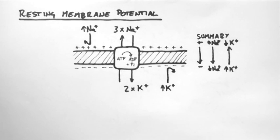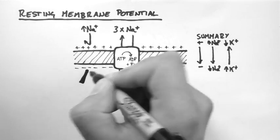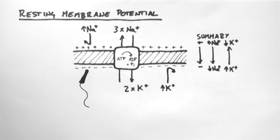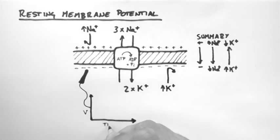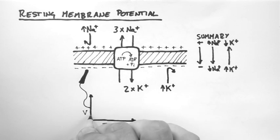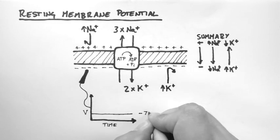And this sets the scene for an action potential. Finally let's look at what happens when you record the voltage inside the cell. We are looking at the voltage across the membrane versus time. And we can see that in a resting membrane potential the voltage stays steady.